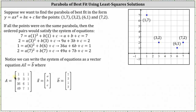From the first equation, the first row is 1, 1, 1. From the second equation, the second row is 9, 3, 1. From the third equation, the third row is 36, 6, 1. And from the fourth equation, the fourth row is 49, 7, 1. Vector x is the three-by-one matrix containing entries a, b, and c. Vector b is the four-by-one matrix containing the constants 7, 2, 1, 2.